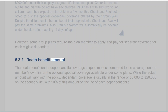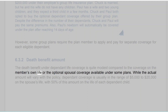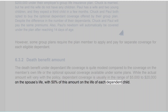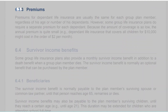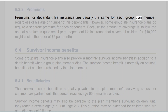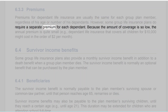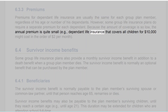6.3.2 Death Benefit Amount. The death benefit under dependent life coverage is quite modest compared to the coverage on the member's own life. While the actual amount will vary with the policy, dependent coverage is usually in the range of $5,000 to $20,000 on the spouse's life, with 50% of this amount on the life of each dependent child. 6.3.3 Premiums. Premiums for dependent life insurance are usually the same for each group plan member, regardless of age or number of dependents. Because the amount of coverage is so low, the annual premium is quite small — for example, dependent life insurance covering all children for $10,000 might cost around $2 per month.